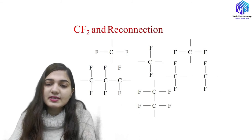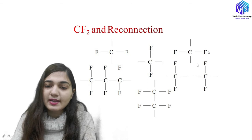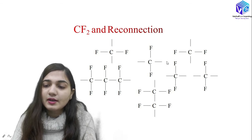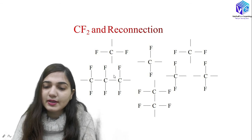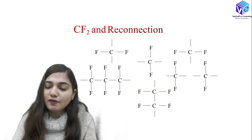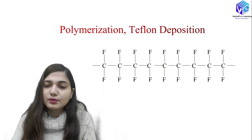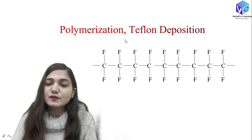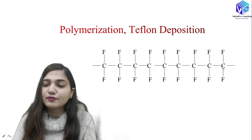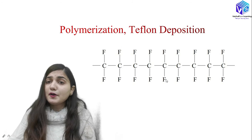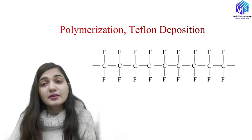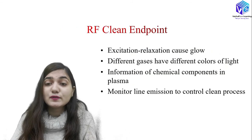Looking at CF2 and its reconnections — CF2 has two vacant positions for carbon, and you can see different vacant positions for different types of CF2. This polymerization is called Teflon deposition, where all the CF2 combine. This process consumes free fluorine molecules, reducing the cleaning speed and increasing the cleaning time. So polymerization should not occur.